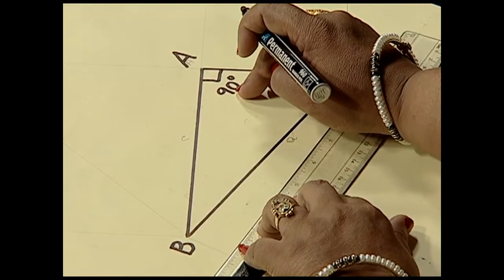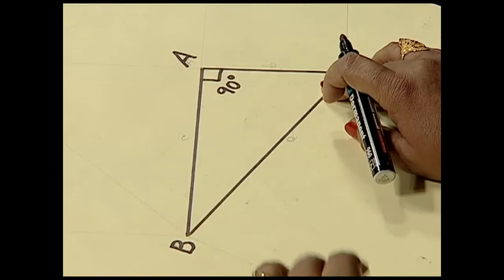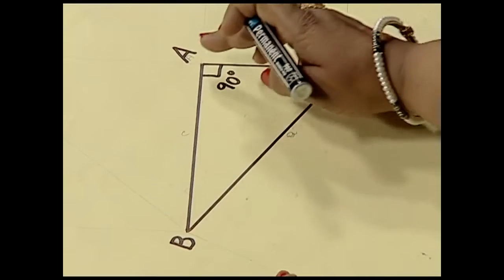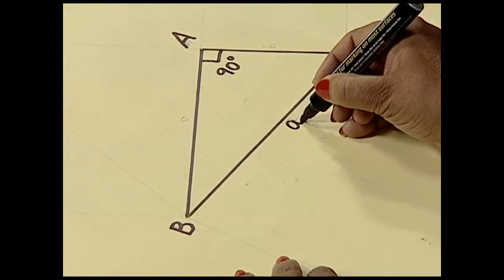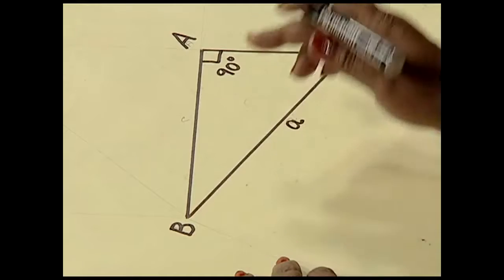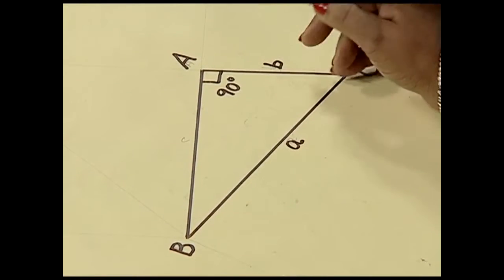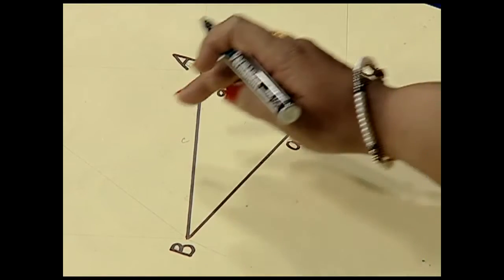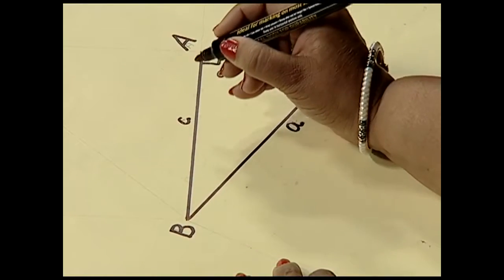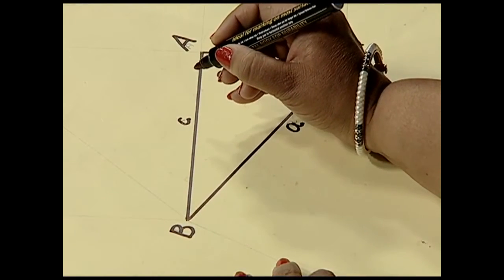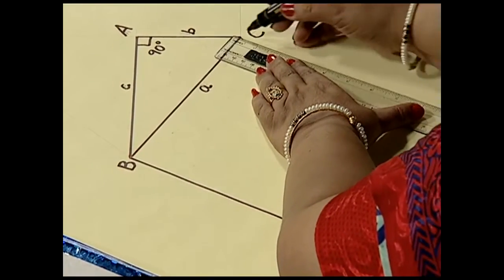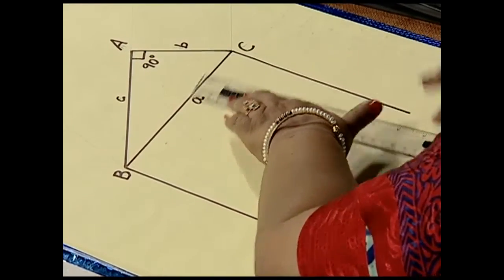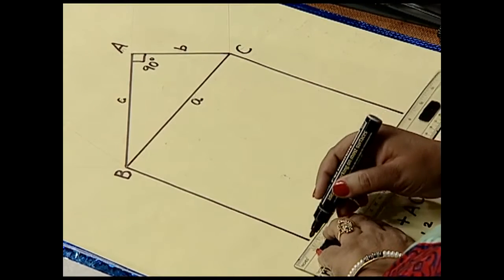Now to verify the theorem, we need squares on the sides of triangle ABC. We denote the side opposite to angle A as small a, the side opposite to angle B as small b, and the side opposite to angle C as small c. In order to verify our result, we construct a square along BC of length a, and you can see here that this square is of area a².